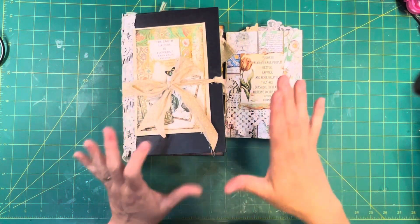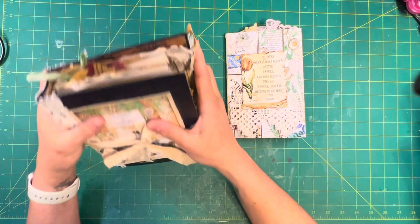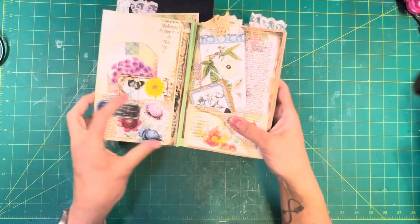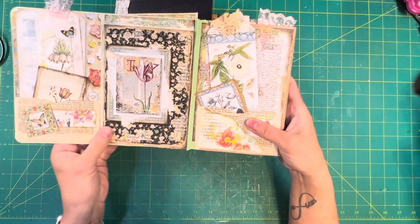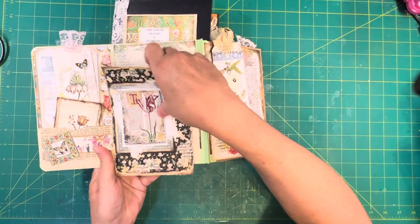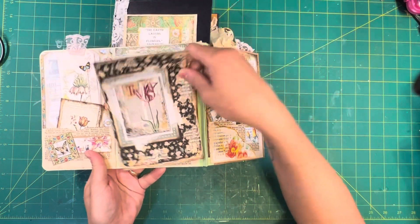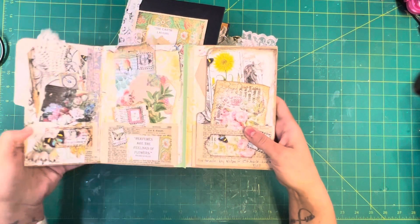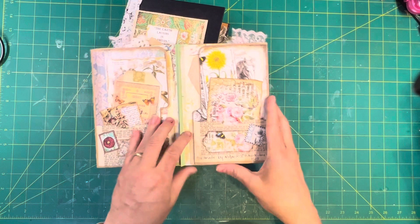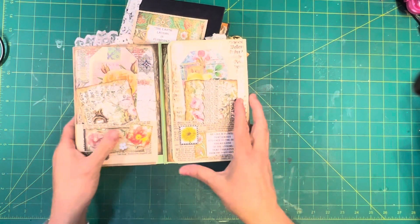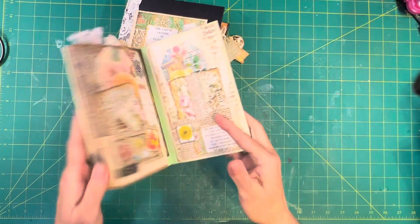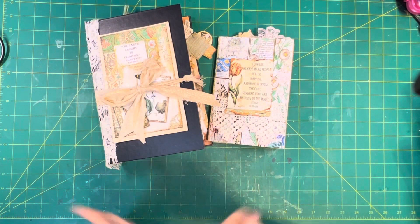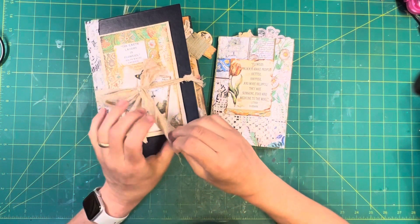There were nine people that entered the drawing for this fabulous full-size journal and the folio that I made for it as well. It has journaling cards, tags, pockets - you could use this for an ephemera holder. This will be for the 400 subscriber milestone.